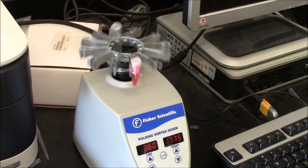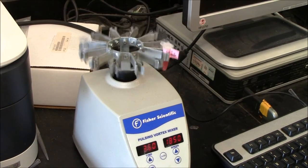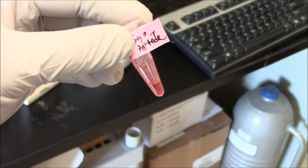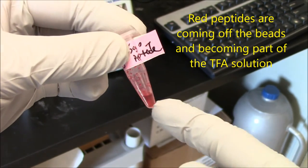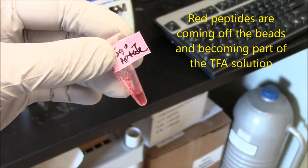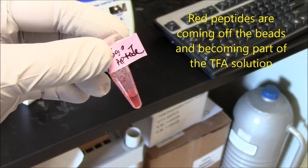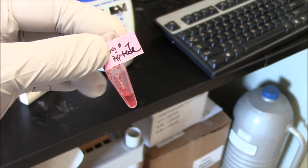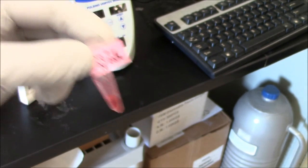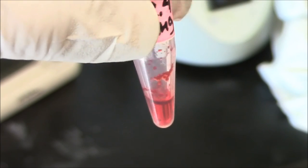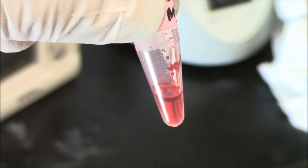Here I've got the beads in TFA on the vortexer. TFA is dense, so the beads tend to float on the top, but there's clearly red color in the TFA solution, therefore I can tell that the peptide is being cleaved from these beads. It's only been about 15 minutes. It's now been about 30 minutes of cleaving from the resin, getting redder in the solution.